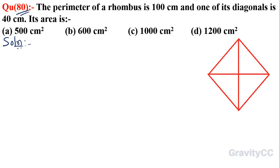Chapter area question number 80: The perimeter of a rhombus is 100 centimeters and one of its diagonals is 40 centimeters. Its area is? This question gives the rhombus perimeter as 100 centimeters, so P equals 100 centimeters.